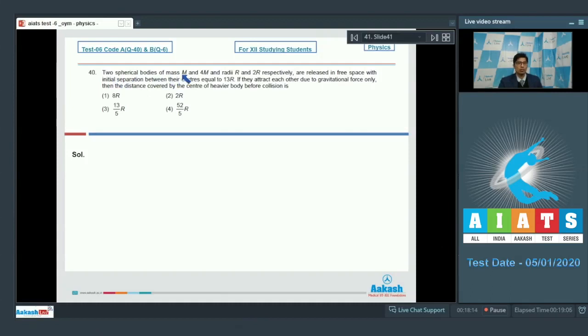Now, let us proceed and discuss question number 40. Question number 40 says, two spherical bodies of mass m and 4m and radii r and 2r respectively are released in free space with initial separation between their centers equal to 13r. If they attract each other due to gravitational force only, then the distance covered by the center of heavier body before collision is.